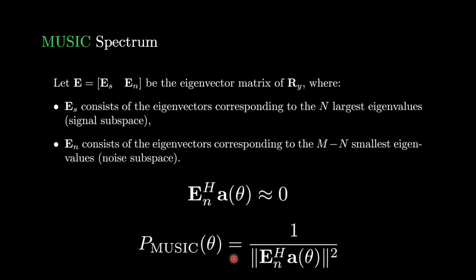We can now create an angle-dependent spectrum: P_MUSIC(θ) = 1 / ‖E_N^H · a(θ)‖². At the true angles θ₁, θ₂, ..., θ_N, the denominator goes to zero, producing very sharp peaks. This gives sharper peaks than other basic direction-finding methods. This falls under the umbrella of subspace-based methods, since we exploit the noise subspace property to calculate the spectrum.